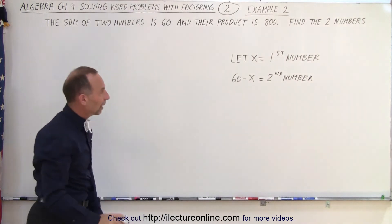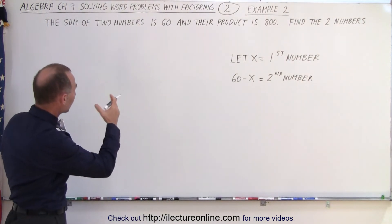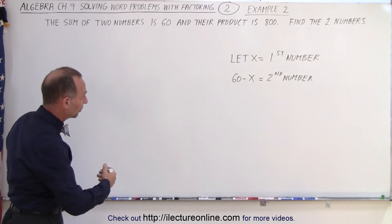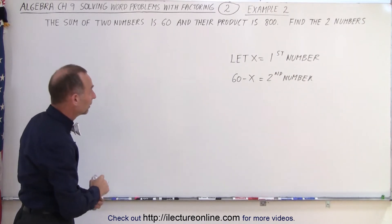So now we've defined the two numbers because we're given that the sum is 60. If x is the first number, then 60 minus x is the second number. Now, they're telling us that the product of the two numbers is